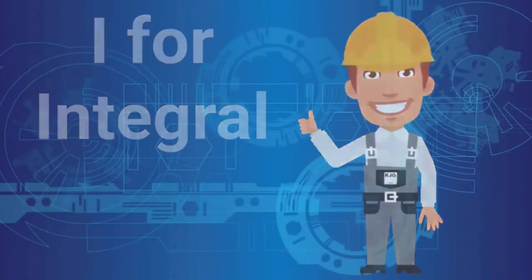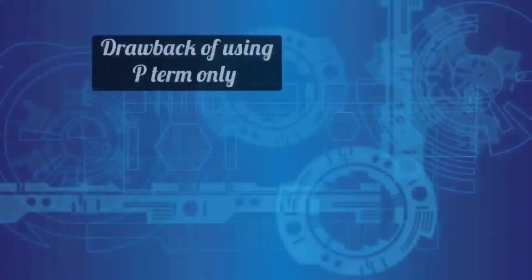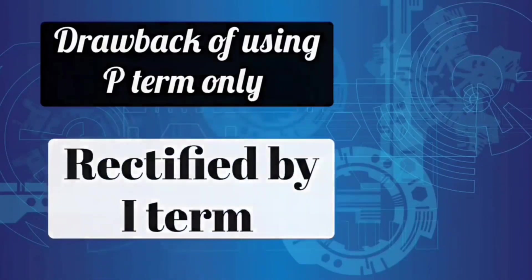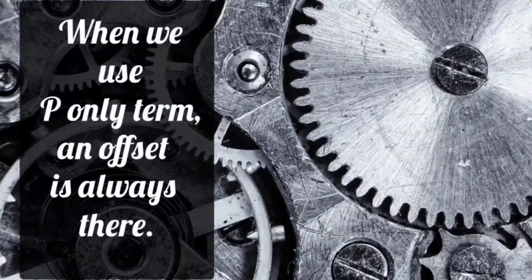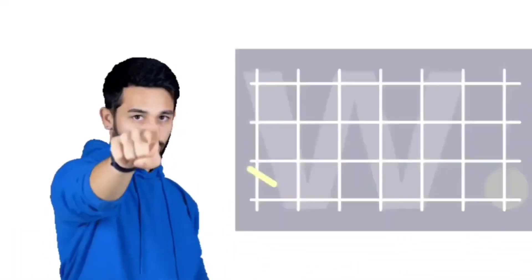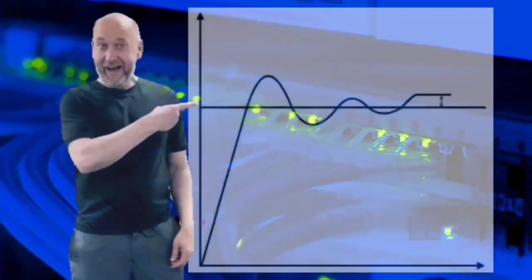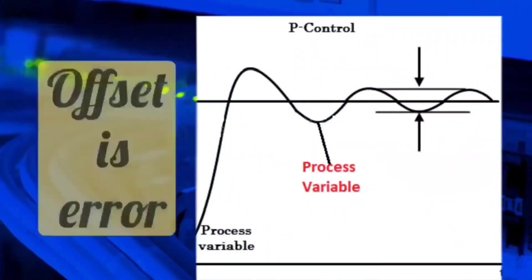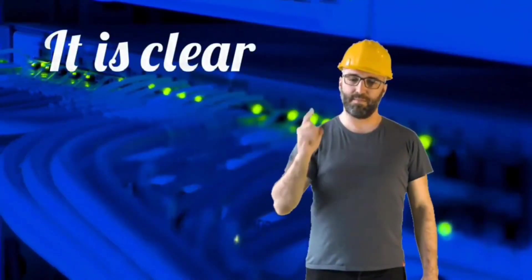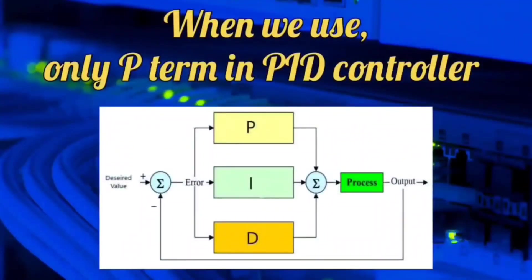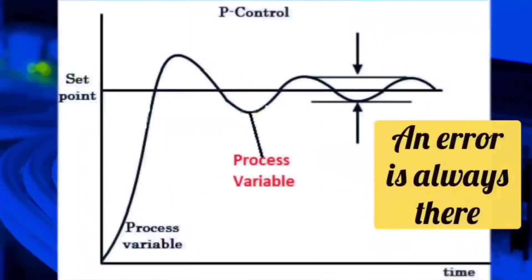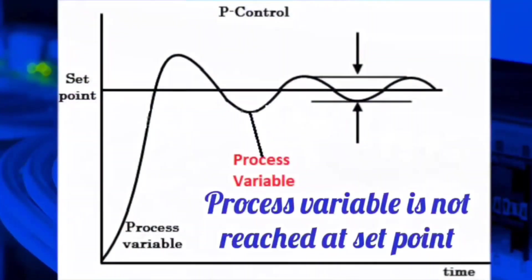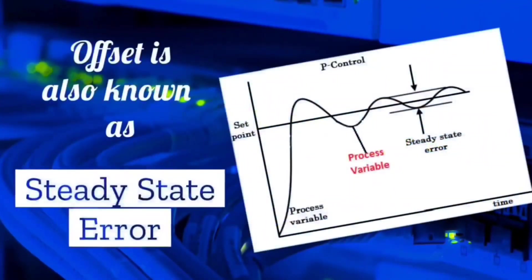Let's see I for integral. Before that, you need to know what was missing in P, so that the I term had to be introduced. When we use only P term in PID controller, an offset is there. To understand this offset, you can see this graph. Offset means the process variable deviates from the set point. So offset is the error. When we use only P term in PID controller, an error remains and the process variable does not reach the set point. Offset is also called steady state error.